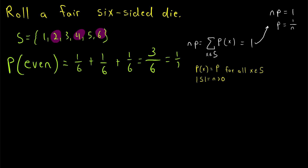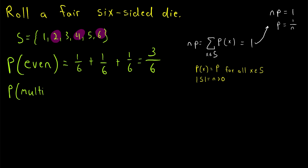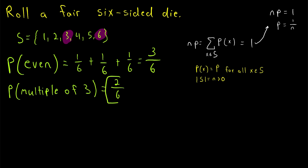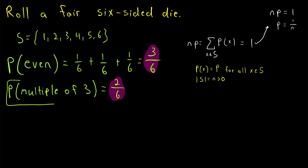Notice that we could reduce this fraction to 1 half, but oftentimes we're not going to want to do that. Leaving this fraction as 3 over 6 makes it easier to compare it to other probabilities in the same experiment. For example, what's the probability that we roll a multiple of 3? We could roll 3 or 6, so there are two ways, giving a probability of 2 over 6. Since we've left both probabilities with a denominator of 6, we can quickly see that 3 over 6 is greater than 2 over 6.